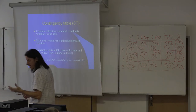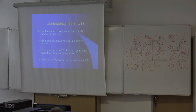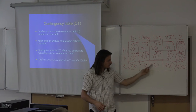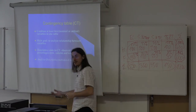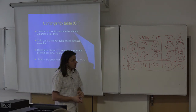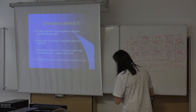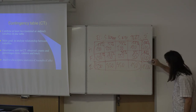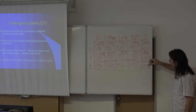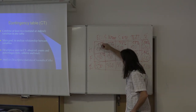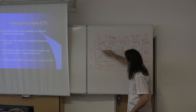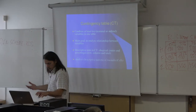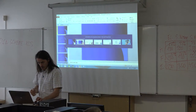A contingency table can show observed counts, row percentages, column percentages (where the base is the column total), or total percentages (where the base is the total number of respondents — in our example 1,200 — expressing each cell as a share of the whole sample). Let's practice this computation in SPSS.